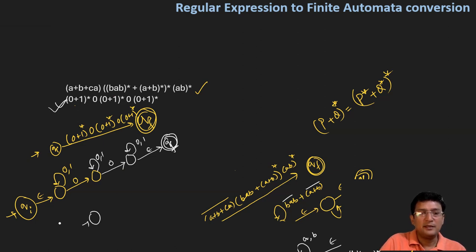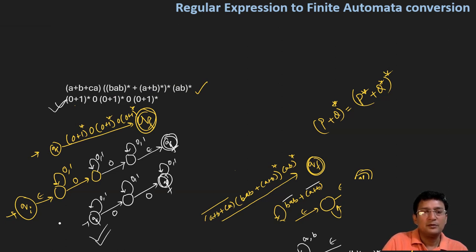You can use a shorter approach: from the initial state, have a self-loop for (0+1), then transition on 0 to the next state, with (0+1) transitions continuing to the final state. Both methods are correct, but for examinations, it's preferable to design with epsilon transitions. Thanks for watching, we'll meet again with a new concept.